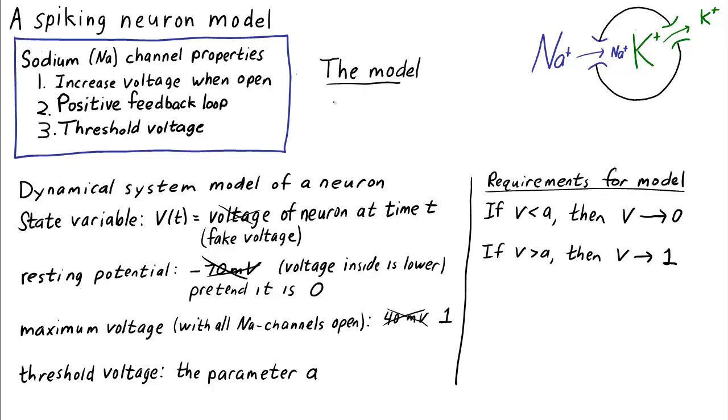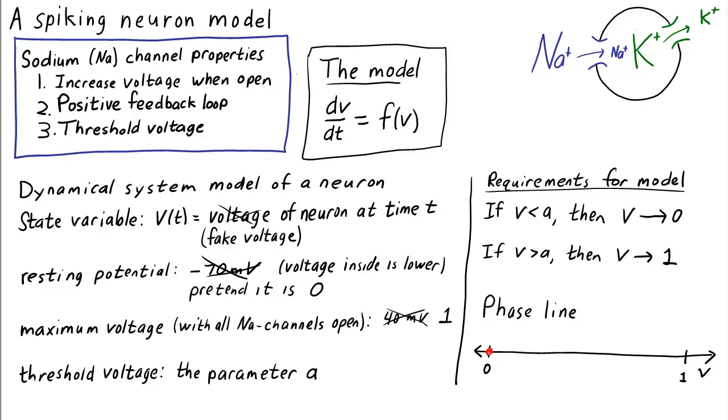If we write the differential equation model in the form dV/dt equals F(V), what should the function F(V) look like to have these properties? For starters, what should the phase line look like? We definitely want stable equilibria at V equals zero and V equals one. The threshold voltage, V equals A, should be an unstable equilibrium between them.